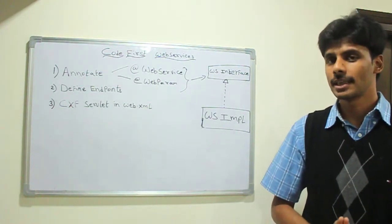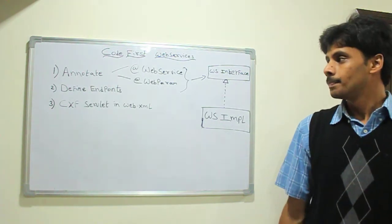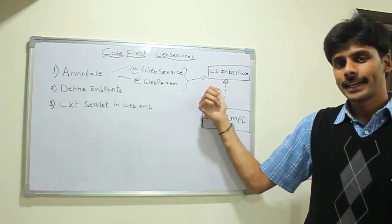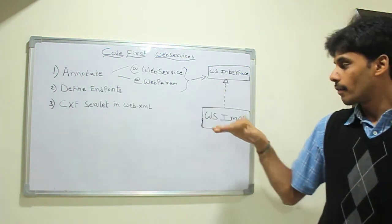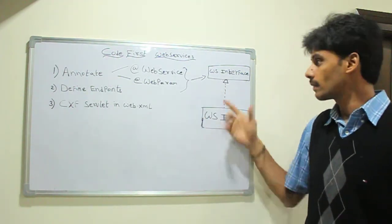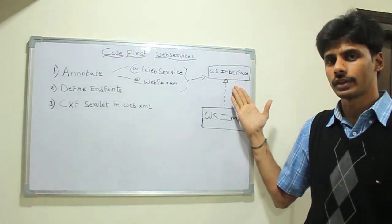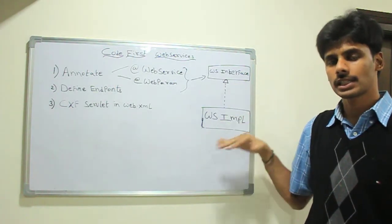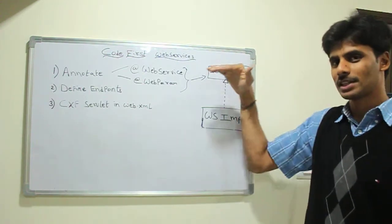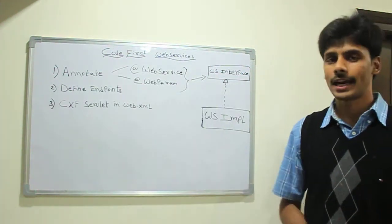There are several other annotations — you will see them in action when we get to the hands-on. Once we define that interface and annotate it, our web services class that we want to expose as a web service will implement that interface and override all the methods within it. If this class already exists, we will do it the other way around — from this class, we write the interface and then annotate it.